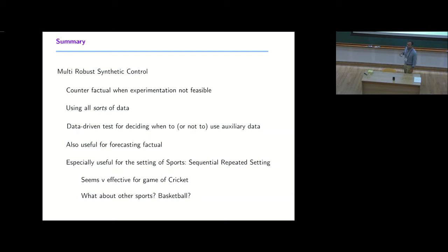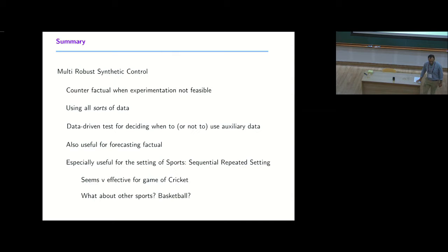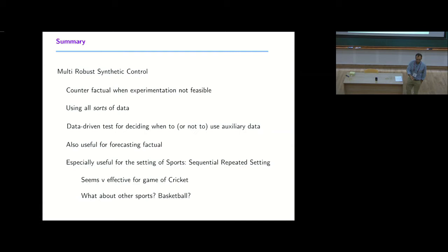One open question is how to decide at a high level which auxiliary data to include before filtering via the rank-preservation test. If you include bad donors with limited data, the noise overwhelms the signal before you can recover it. We're trying to get live cricket data feeds but everyone wants money for that, so we're working to convince data providers to share feeds with academics. Dream 11 has a Fancode platform with crowdsourced real-time data, and we're exploring integration.